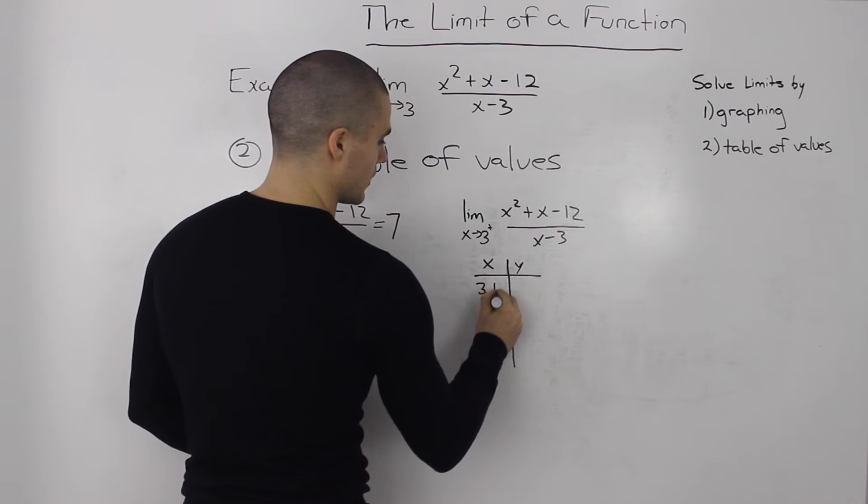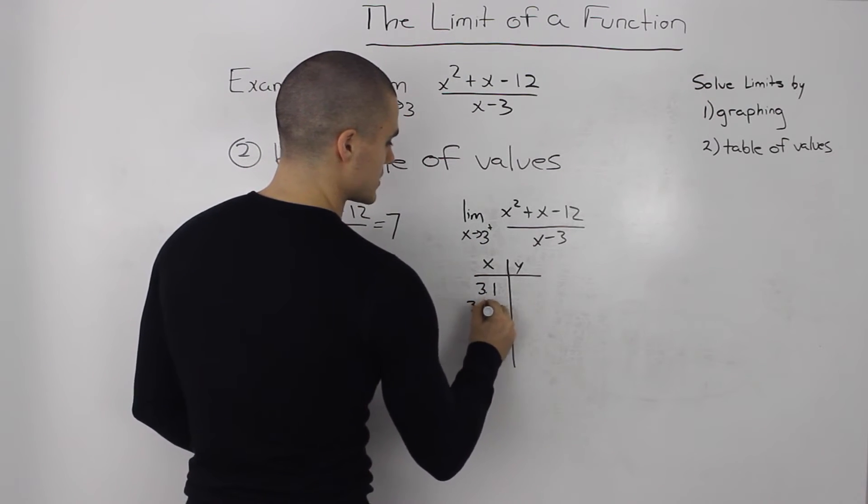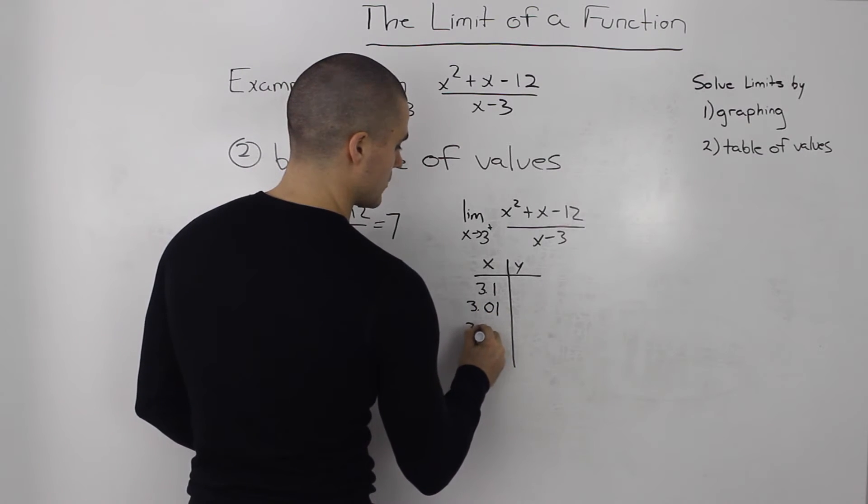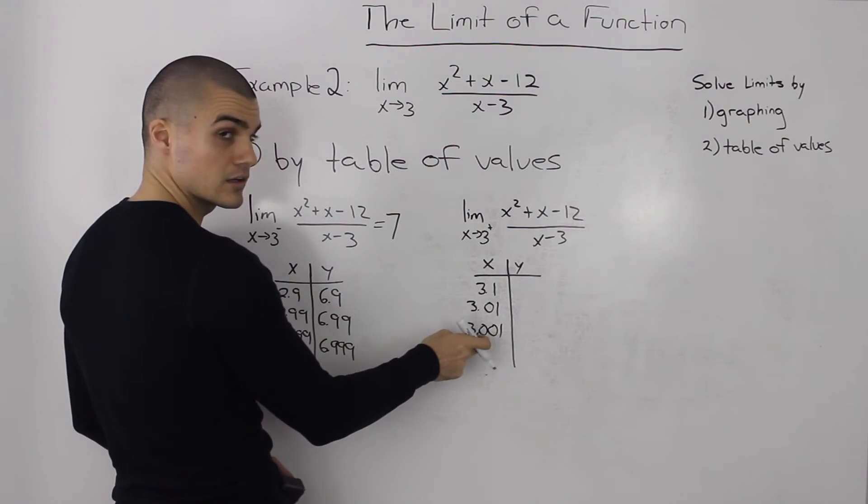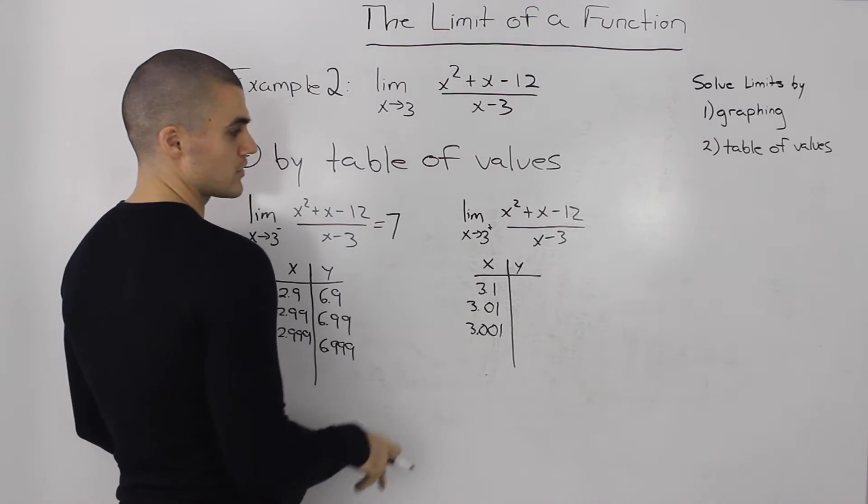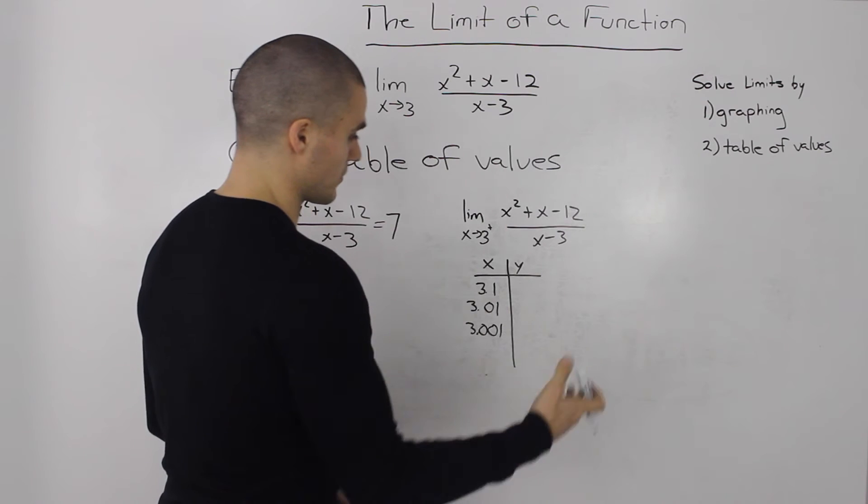Let's use 3.1, 3.01, and 3.001. We're getting closer to 3 from the positive side or right side.